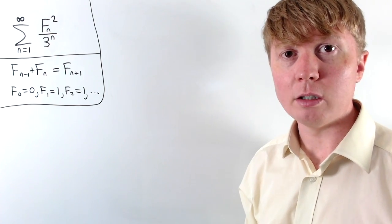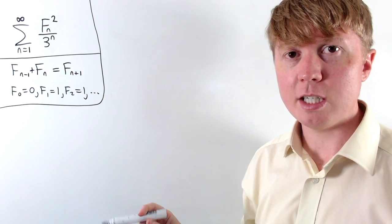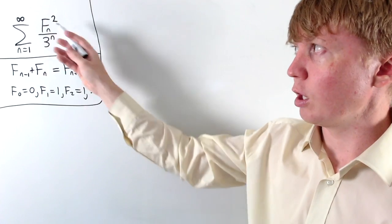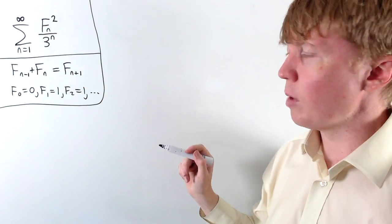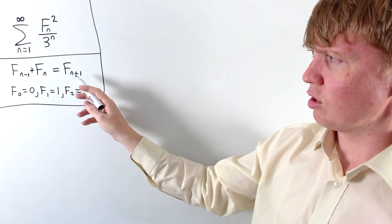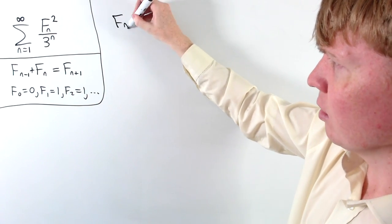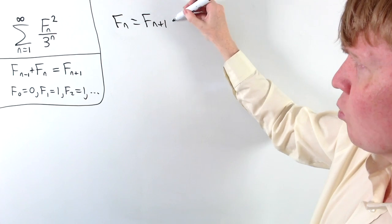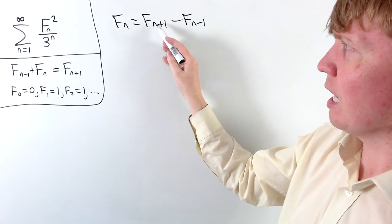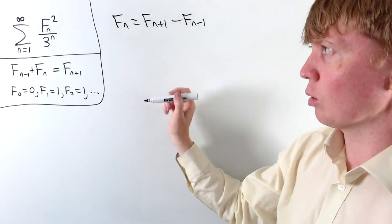Our approach here is going to rely on effectively rewriting this sum in terms of itself in a way so that we can solve an equation to find the value of our sum. To get started, we can use this recurrence relationship: we can express fn as fn+1 minus fn-1 — the next term minus the previous term — just rearranging this equation.